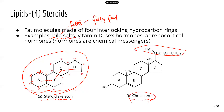Vitamin D is actually a steroid — you probably never knew that. Sex hormones like estrogen and testosterone are also steroids, and some adrenocortical hormones are steroids as well. Remember, hormones are chemical messengers — that's how cells communicate with one another.